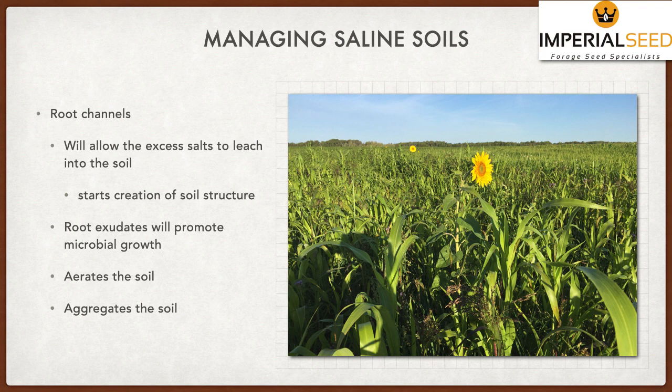The root channels allow excess salts to leach down into the soil. As we get roots, we get root exudates, we get biology, and then we create more and more soil structure. With that soil structure, things start working much better. As those root exudates are released, producing more biology, the biology needs somewhere to live so they create homes for themselves — aerating the soil and aggregating it. We're starting to get that system fixed.